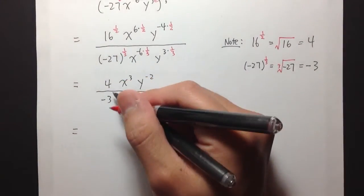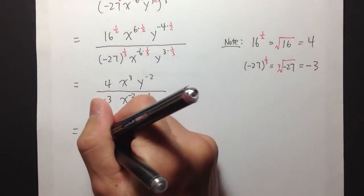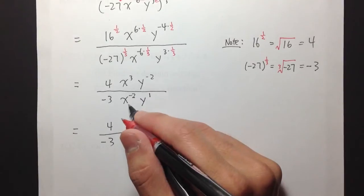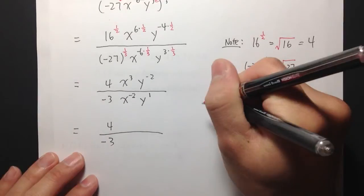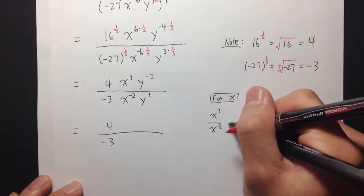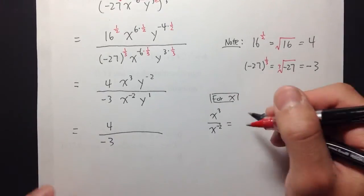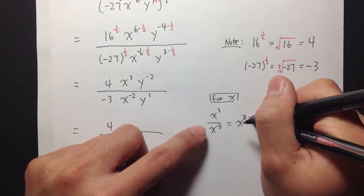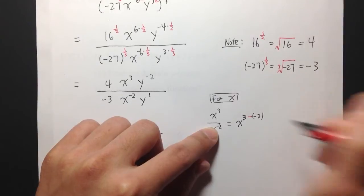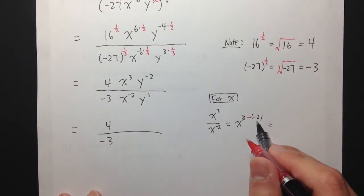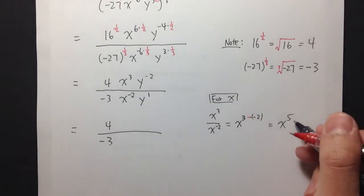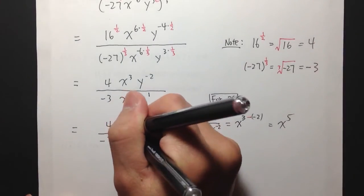So notice that 4 over negative 3, we cannot simplify that anymore. But then for x, we have x to the third power over x to the negative 2. We can simplify that. When we divide, we subtract the exponents. So we get x to the third power minus negative 2, which is 3 plus 2, giving us x to the fifth power. Since this is a positive exponent, it stays in the numerator.